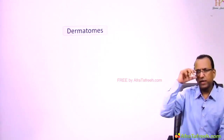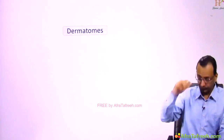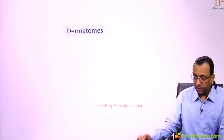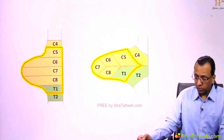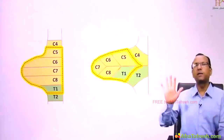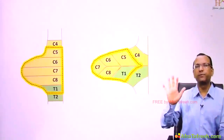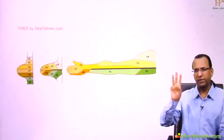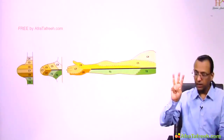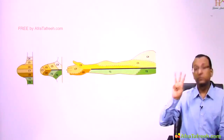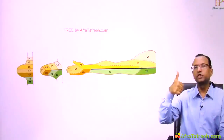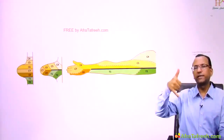Returning to upper limb dermatomes: there are 5 roots of the brachial plexus distributed in such a pattern that the middle three fingers are C7 dermatome. Thumb is C6 and little finger is C8.